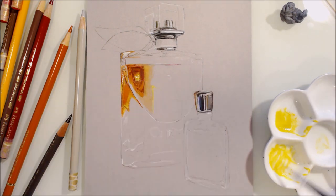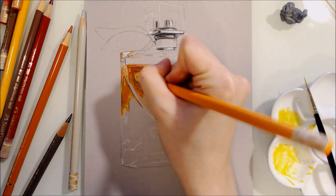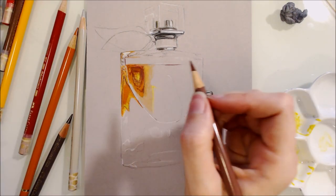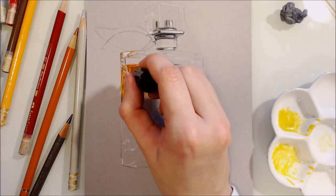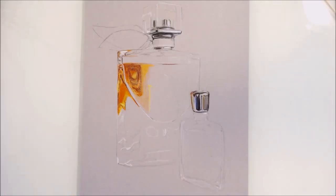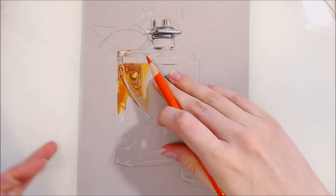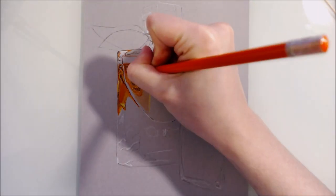I apply the Zest-It with a small filbert brush and work in tiny circles to help remove any texture from the pencil application and give a smooth appearance, which is perfect for glass. This process also helps to unify your layers and merge the colors together.